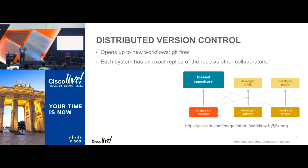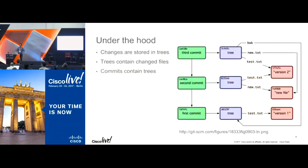In centralized models, you check out a file and then no one else can work on that file. In distributed version control, you can be working on the same file — you do have to consolidate, and when you do, you'll have to reconcile sometimes. But it enables a more distributed way of working, which I think is more natural for people.